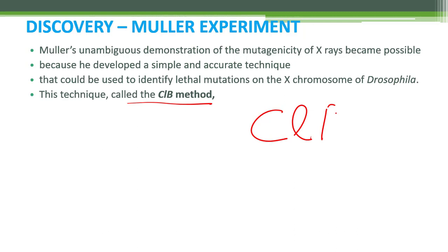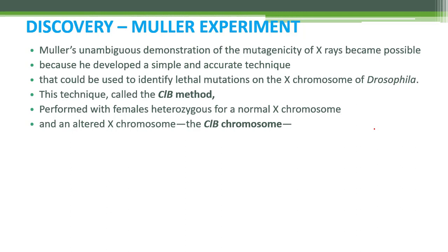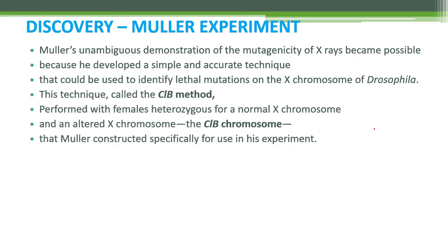Muller identified lethal mutations and presented complete results using a technique called the CLB method — C, L, and B. The heterozygous female used had one normal chromosome and one modified chromosome called the CLB chromosome. Muller himself constructed the CLB chromosome through different crosses.